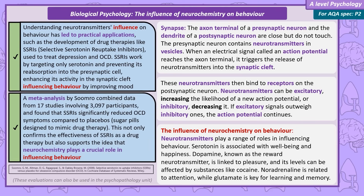There is research to show these drugs are effective. A meta-analysis by Soomro compared SSRIs to placebos — sugar pills that make the patient think they're receiving drug therapy. Soomro combined the data from 17 studies including 3,097 participants. The results showed that compared to placebos, SSRIs significantly reduce the symptoms of OCD. This suggests not only that the drug therapy is effective, but importantly, it suggests behaviour is influenced by neurochemistry.